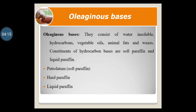Hard paraffin is a purified mixture of solid hydrocarbons obtained from petrolatum. It is a colorless or white translucent, odorless, tasteless, wax-like substance, used to harden or soften the ointment base. Liquid paraffin consists of a mixture of liquid hydrocarbons obtained from petroleum by distillation. It is also known as white mineral oil or liquid petroleum — a colorless, odorless, tasteless and transparent oily liquid. It is used along with hard paraffin and soft paraffin to achieve a desired consistency of ointment.